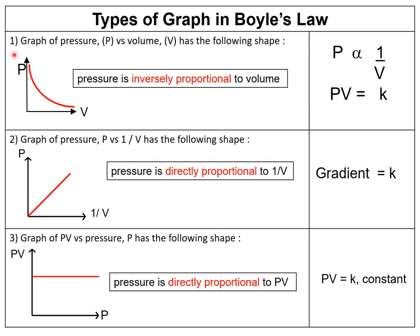There are three types of graphs in Boyle's Law. The first is a graph of pressure against volume, showing that their relationship is inversely proportional. The second is a graph of pressure against 1/volume, showing a straight line — their relationship is directly proportional — and the gradient of this graph equals the proportionality constant k. The third is a graph of pressure × volume (PV) against pressure, showing PV and P are directly proportional.